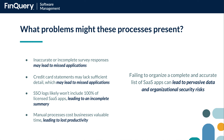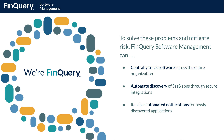Failing to organize a complete and accurate list of SaaS applications in use can lead to pervasive data and organizational security risks. Let's talk about how Finquery Software Management can help mitigate these problems by helping to centrally track software across the entire organization, automate the discovery of SaaS applications through secure integrations, and seamlessly fit into existing IT workflows by driving automated notifications each time a new application is discovered.